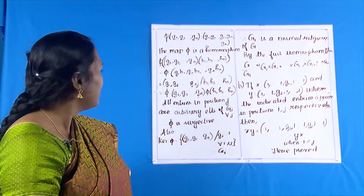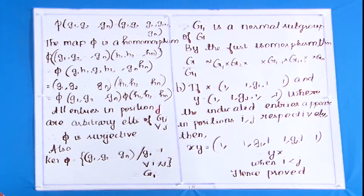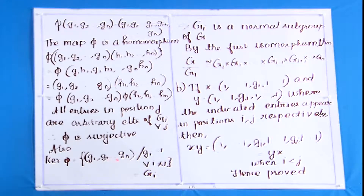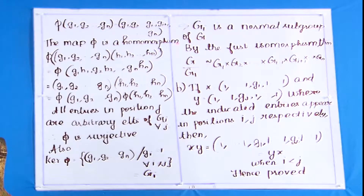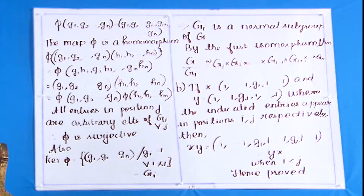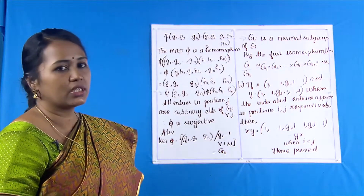Since all entries in position j are arbitrary elements of Gⱼ for all j ≠ i, φ is surjective. The kernel of φ equals {(g₁, …, gₙ) : gⱼ = 1 for all j ≠ i}, which is clearly isomorphic to Ḡᵢ. This implies Ḡᵢ is a normal subgroup of G, and by the first isomorphism theorem, G/Ḡᵢ ≅ G₁ × … × Gᵢ₋₁ × Gᵢ₊₁ × … × Gₙ. The first result is proved.